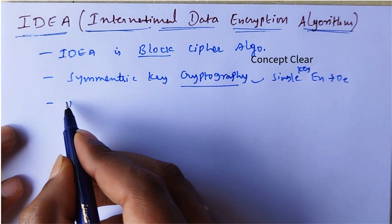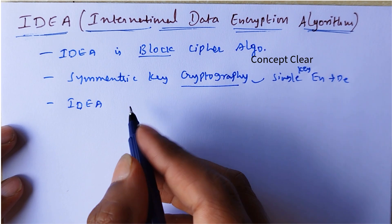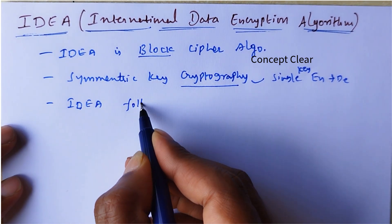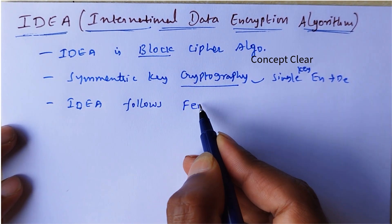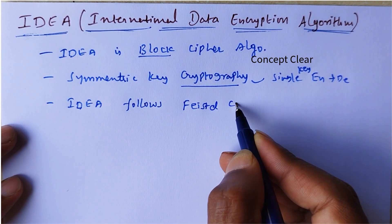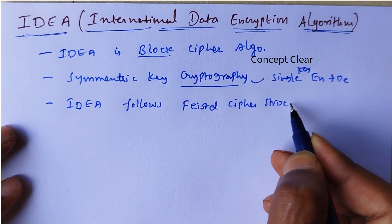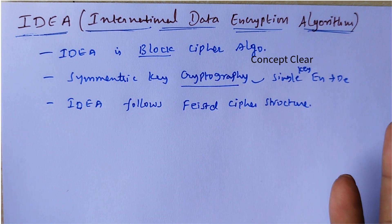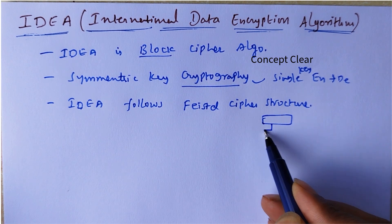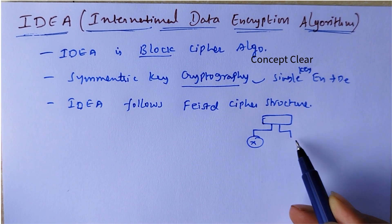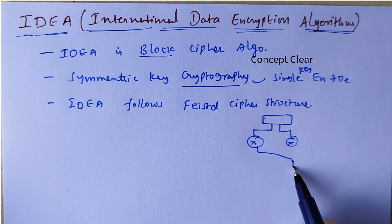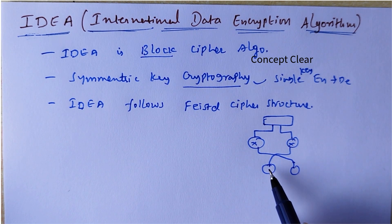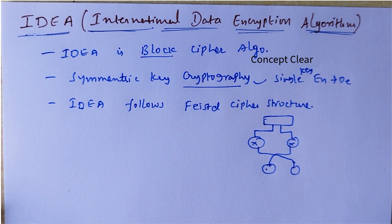IDEA algorithm follows Feistel cipher structure. In Feistel cipher structure, the plain text is divided into a left side part and a right side part. Operations are performed, and after that, the left side data and right side data are swapped. Again, we perform the same operation repeatedly. This is called Feistel structure.